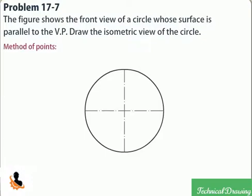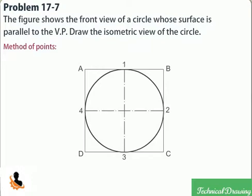Method of points: Enclose the circle in a square, touching it in points 1, 2, 3, and 4.